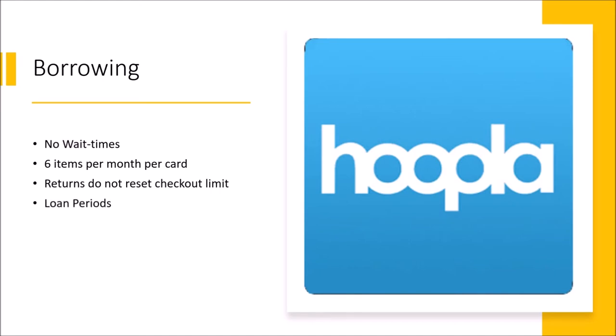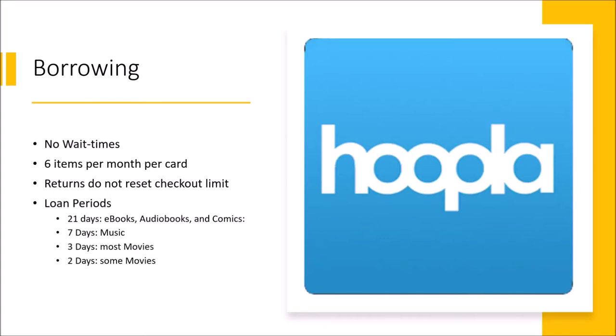Loan periods: all the different materials in Hoopla have different loan periods. E-books, audiobooks, and comic books go out for 21 days. Music goes out for 7 days. Most movies go out for 3 days; however, there are a few movies that, due to publisher concerns, can only be checked out for 2 days. If you run out of time with a particular item and would still like to continue, you can instantly check it out again — however, doing so will count against the 6 item per month limit.